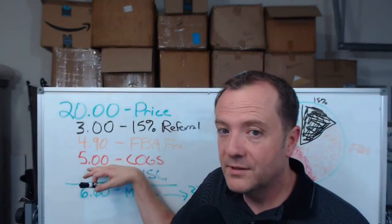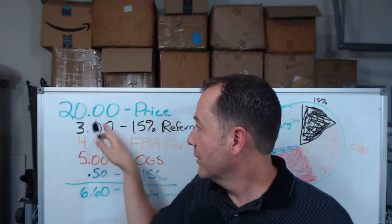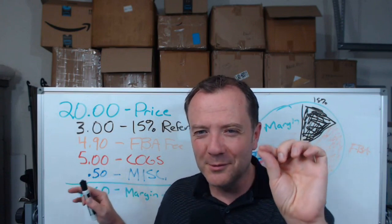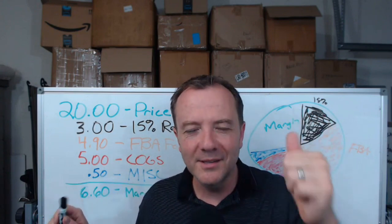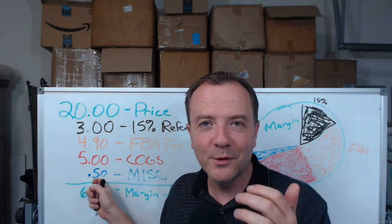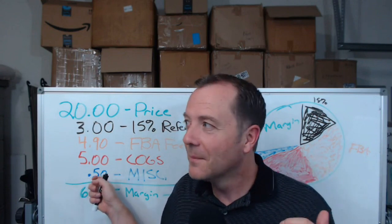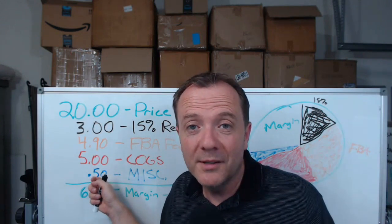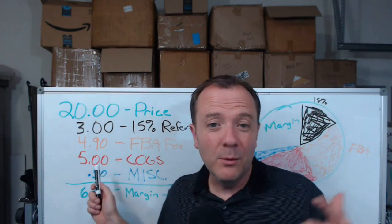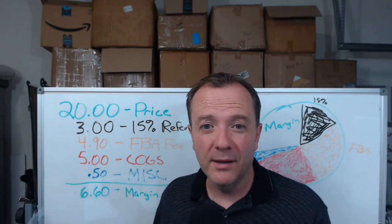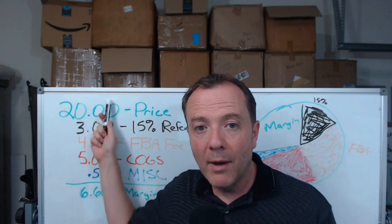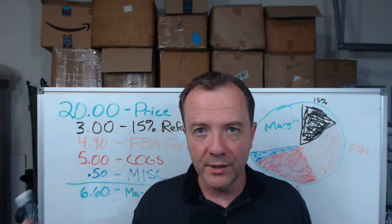Oftentimes we stop there and say: okay, you've got Amazon costs and cost of goods sold. But we forget about other little things, like the cost to get it shipped into Amazon's warehouse, inventory storage costs — hopefully you're not paying long-term storage fees — but even two or three months of storage, you're still paying a certain amount per unit. Then there might be labels or poly bags, some additional costs not in those other buckets. Let's say that's about 50 cents.